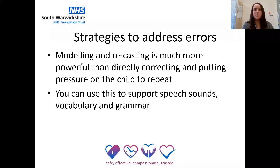Strategies to address errors. When children don't get it quite right, research has shown that it's much more helpful to model the target back to the child correctly rather than directly correcting them — whether it's difficulties with grammar, vocabulary errors, or speech sound difficulties. For example, if a child says "I fall down," you can model back the correct grammar: "oh no, you fell down." By doing this, the child is aware of the error but has not been made conscious of it and is not under any direct pressure to correct. The same goes for speech sound errors — if they say "tat," you can say "yes, you're right, it's a cat." You can leave a pause and see if the child repeats what you say, but don't worry if they don't, as they will have heard the correct model and are likely to have taken it on board.